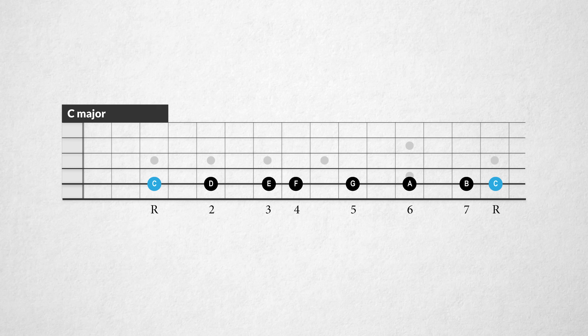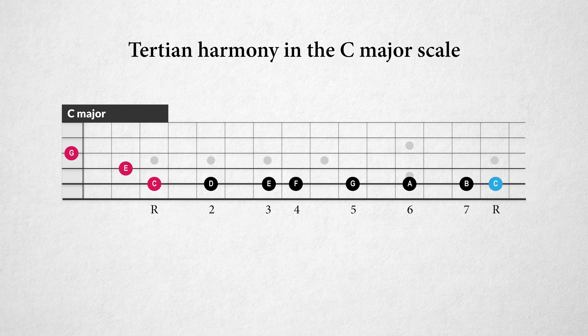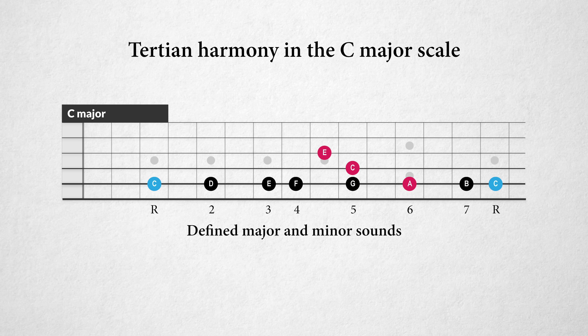The pentatonic scale is a good way to start with quartal chords. But in the diatonic major scale, we can build quartal chords too. Let's take that glorious C major scale and harmonize the notes with quartal chords. First we'll harmonize the C major scale with tertian harmony to hear the difference: C major, D minor, E minor, F major, G major, A minor, B diminished, and again C major. Well, that's old hat, isn't it?